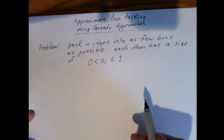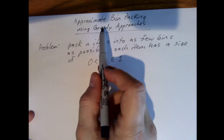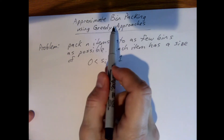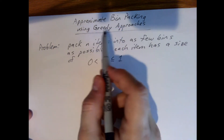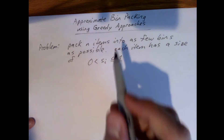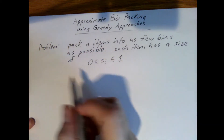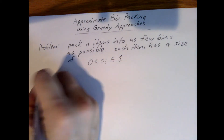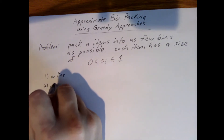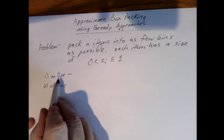One thing to note is that these approaches are not guaranteed to produce optimal solutions. In some cases they can, but it's not guaranteed. Even when they don't, in many cases they may produce what would be considered a good solution. These algorithms come in two basic forms: online algorithms and offline algorithms.